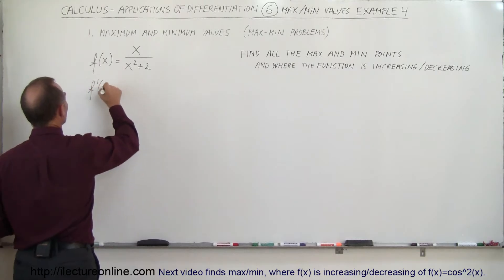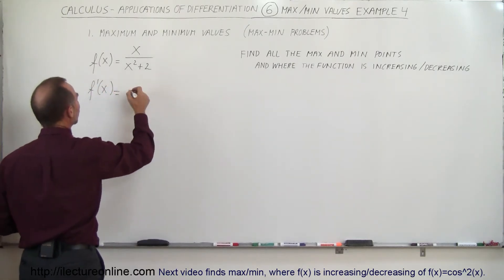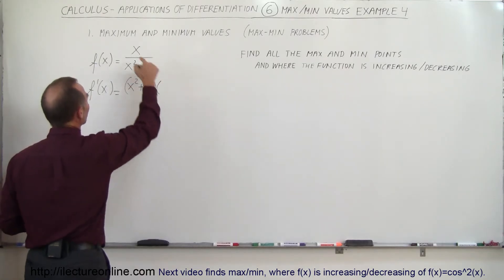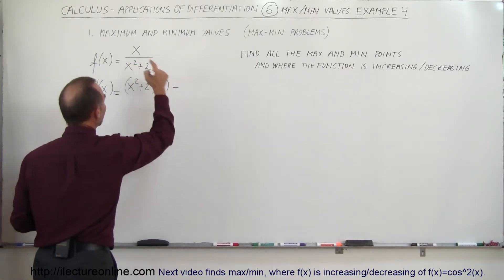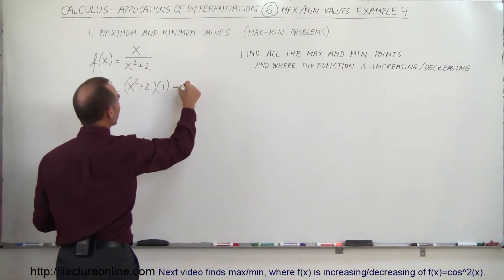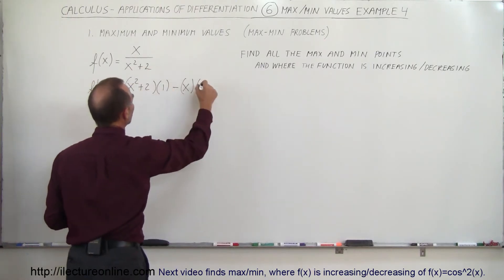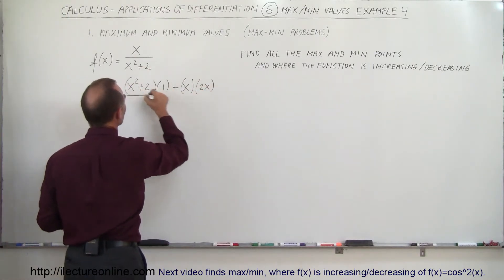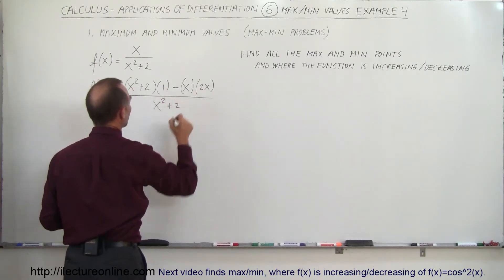f prime of x: here we have to use the quotient rule, so we have the denominator x squared plus 2 times the derivative of the numerator, which would be 1, minus the numerator times the derivative of the denominator, which would be 2x, all divided by the denominator squared, x squared plus 2.